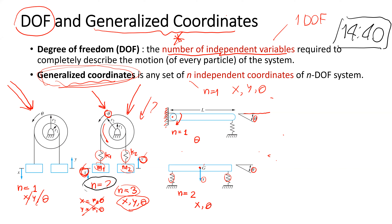If you don't like X and Zeta, of course you may define X1 and X2 to describe the vertical displacement at the left and right connection points of the spring. But the two sets of generalized coordinates can be related by the geometric constraints.